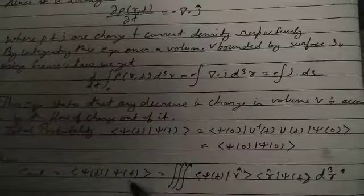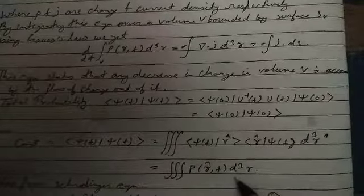⟨ψ(t)|ψ(t)⟩ is equal to triple integration of ρ(r,t)d³r.